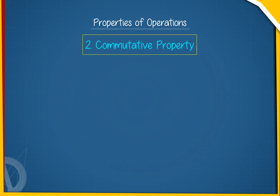2. Commutative property: For rational numbers x and y, x plus y is equal to y plus x, and x multiplied by y is equal to y multiplied by x.